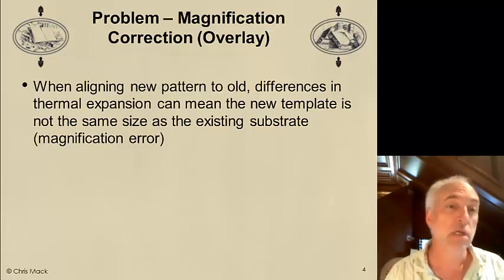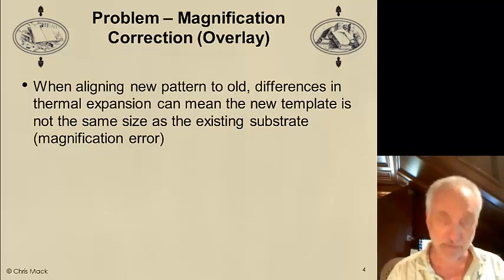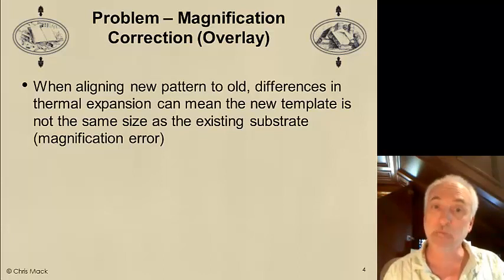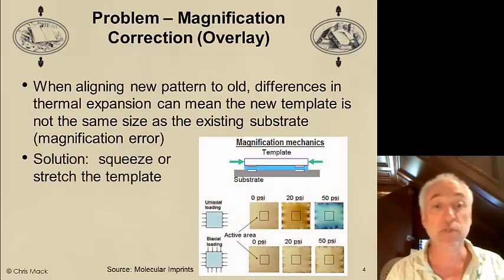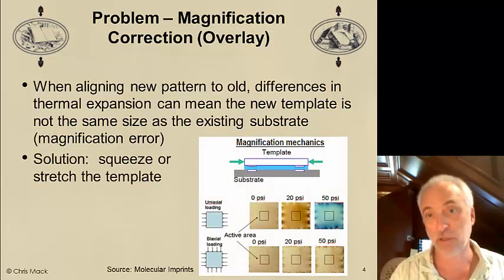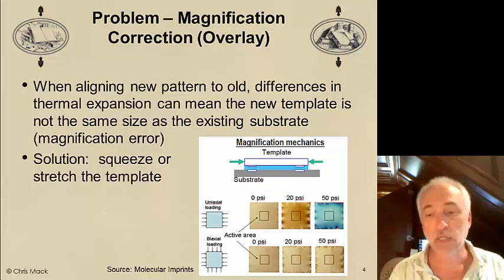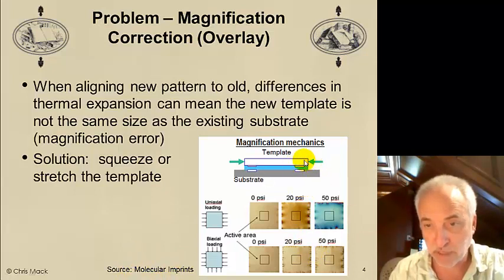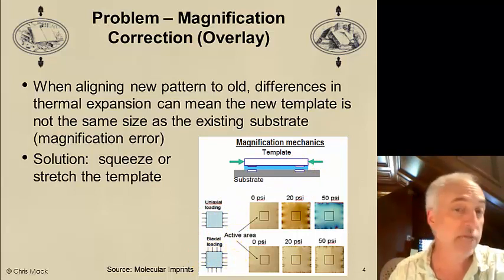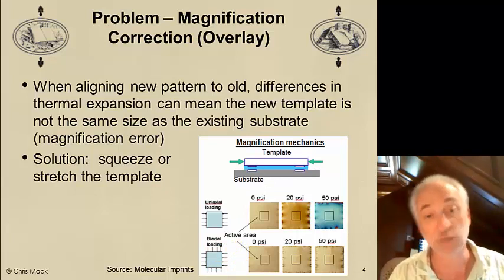How do we fix this? In optical projection lithography, we have optical knobs we can turn to change the magnification — we make a measurement, see we're off, and make an adjustment. With imprint lithography, there is a way: you can use mechanical changes to the template. You can squeeze or stretch the template with mechanical forces. This approach has been used by Molecular Imprints — different amounts of pressure at different points along the outside of the template allow magnification to be adjusted, and in fact allow some higher-order variations in overlay to be corrected as well.